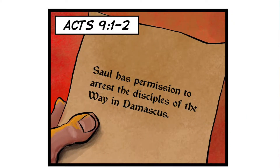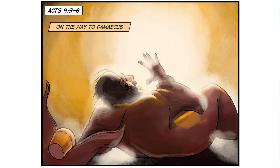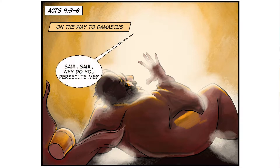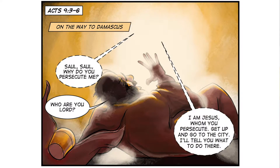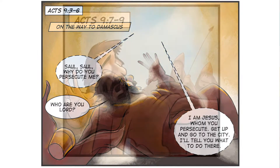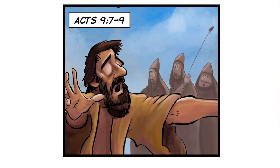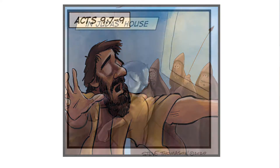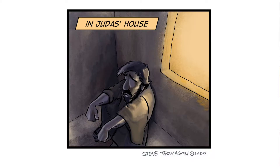Saul was given permission to go to the northern city of Damascus, where he could arrest the followers of Jesus, put them in prison, and he was hoping to execute them and wipe out the scourge. On his way to Damascus, he encounters the risen Christ, who says, 'Saul, Saul, why do you persecute me?' Saul responds, 'Who are you, Lord?' And Christ replies, 'I am Jesus, whom you persecute. Get up and go to the city — I'll tell you what you are to do there.' So Saul gets up, he is blind, and is led into the city of Damascus, where he sits in Judas's house for three days.